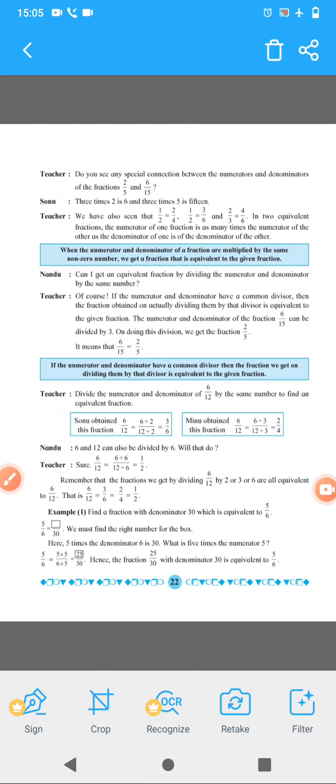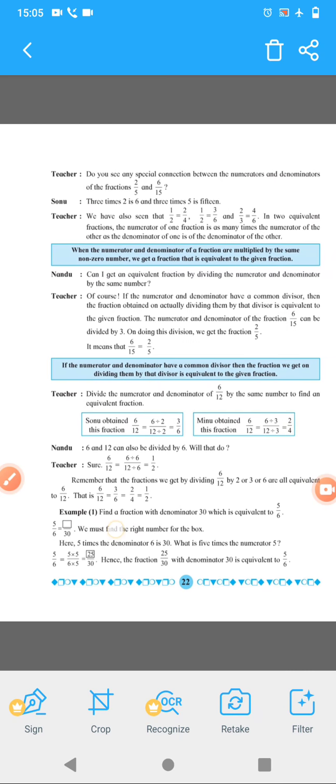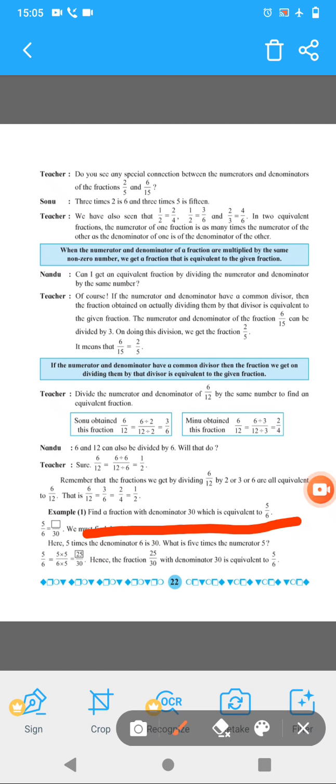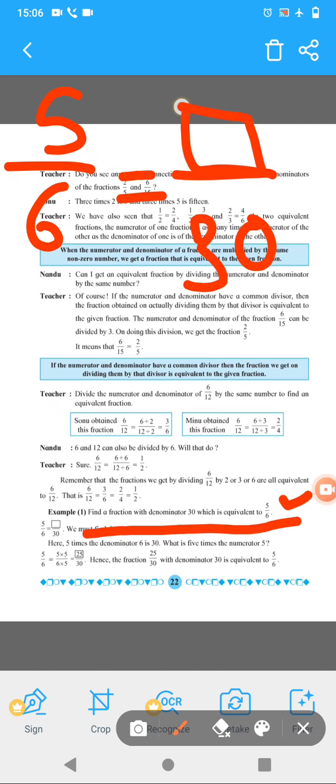What is the question has given here? So now question has given here. Find a fraction with denominator 30 is equivalent to 5 upon 6. So two more thing is important here. So write the first 5 upon 6. And what the question has given here? Find a fraction with denominator 30. 30 has already given here. And we have to find the numerator only.